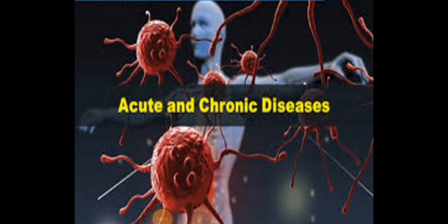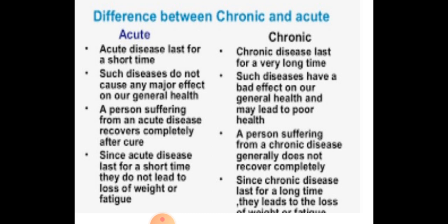Welcome to biology class. In this lecture we will discuss acute and chronic disease. This is one of the important topics of the chapter 'Why Do We Fall Ill.' In the last class we studied about diseases and their signs and symptoms. Now we will study about the types of diseases. Diseases are classified into two types according to their mode: acute disease and chronic disease.